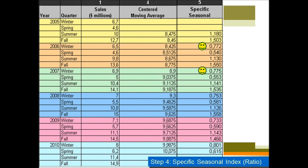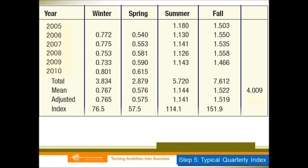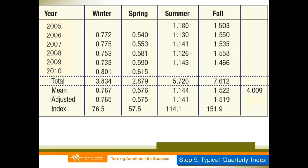Now we need to pick up all the ratios season by season, or quarter by quarter. All the numbers with smiley faces are our winter ratios. After we pick them up, we reorganize the table. The fifth step: we need to get the mean of our ratios for different quarters. So 3.834 is the mean from the winter ratios.